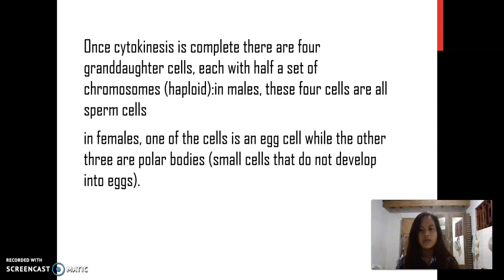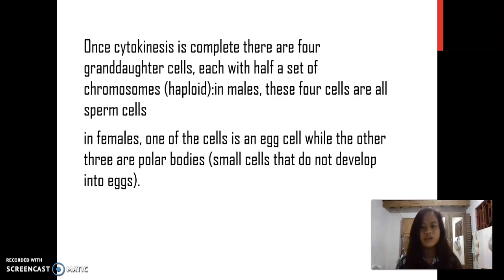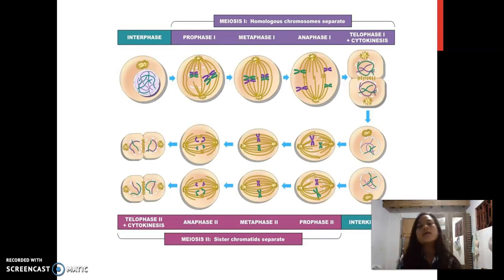In males, these four cells are all sperm cells. In females, one of the cells is an egg cell, while the other three are polar bodies — small cells that do not develop into eggs. This is an example picture of meiosis, showing meiosis I and meiosis II.